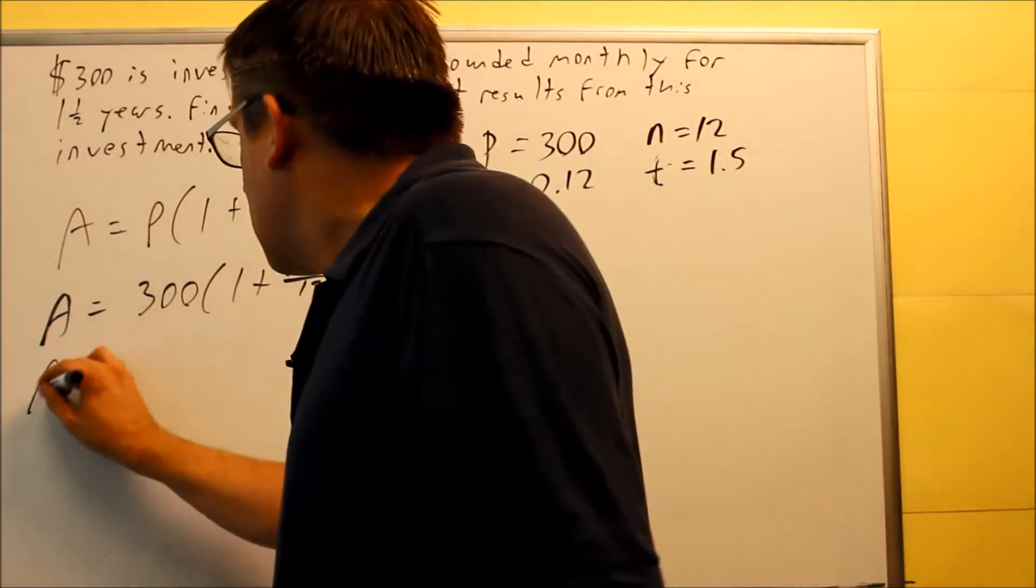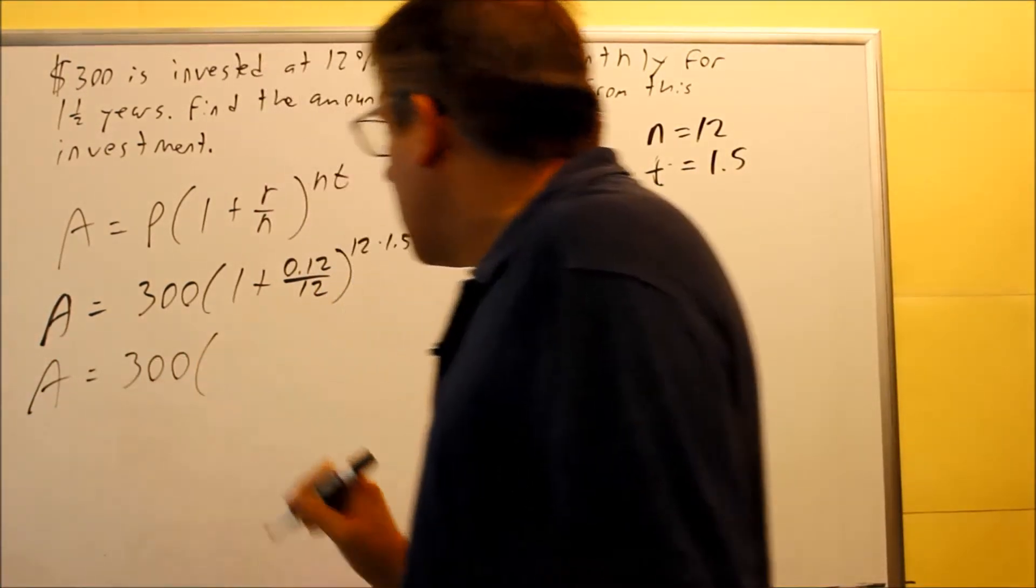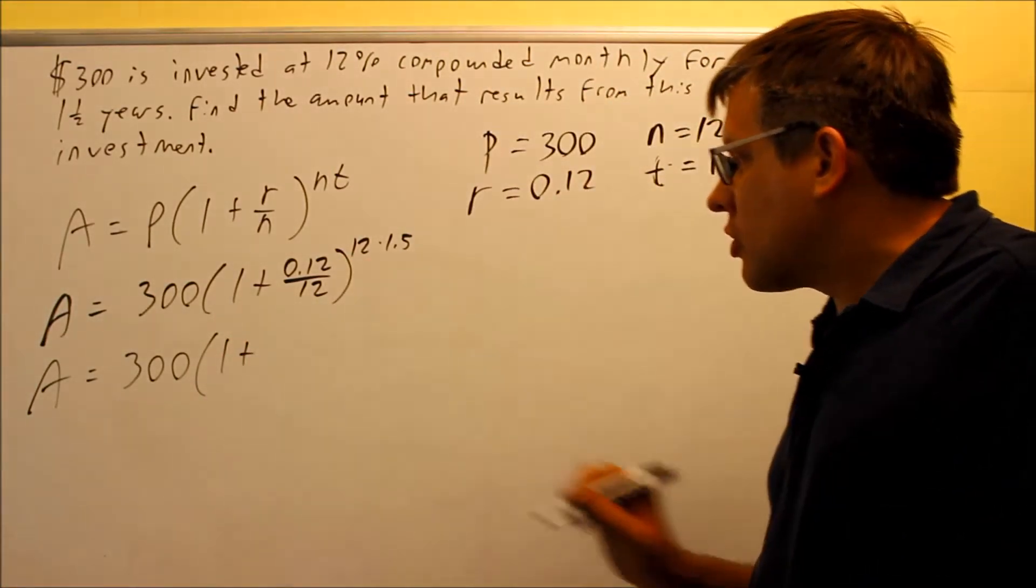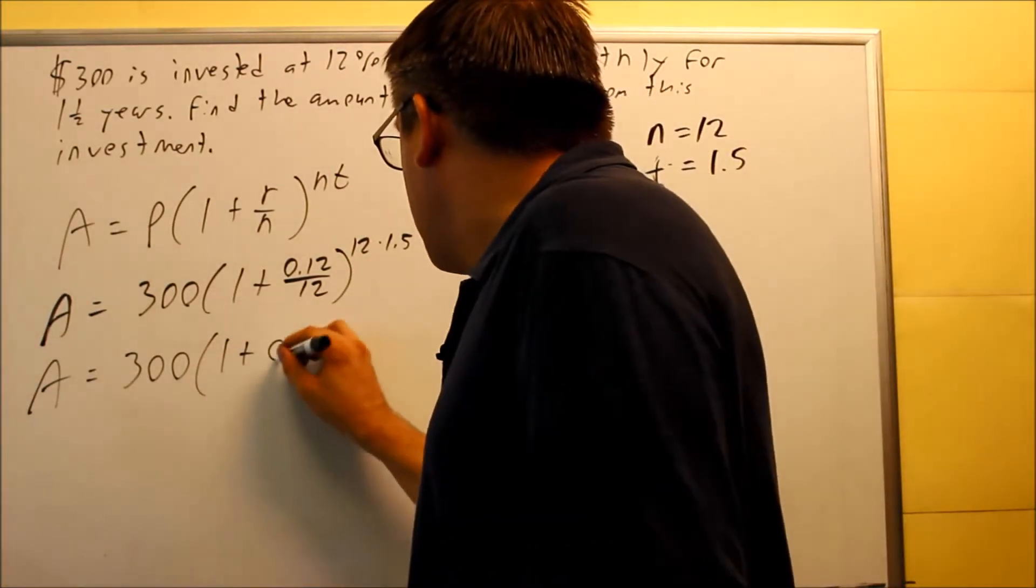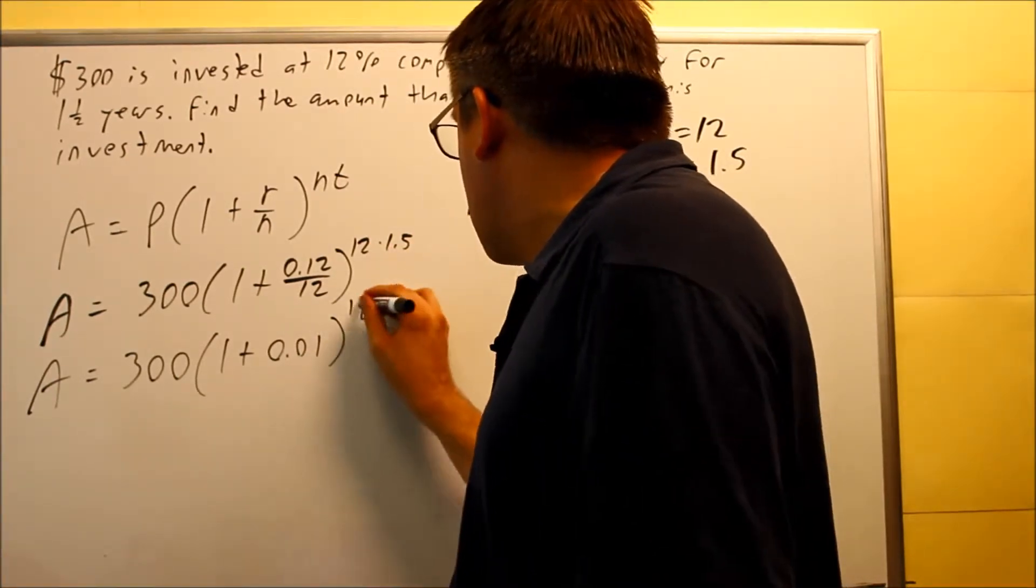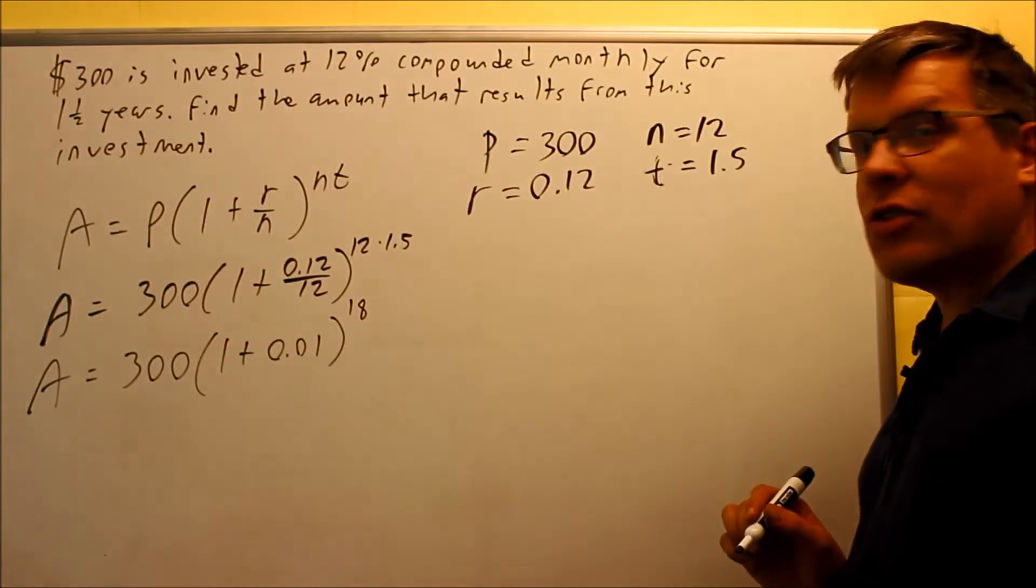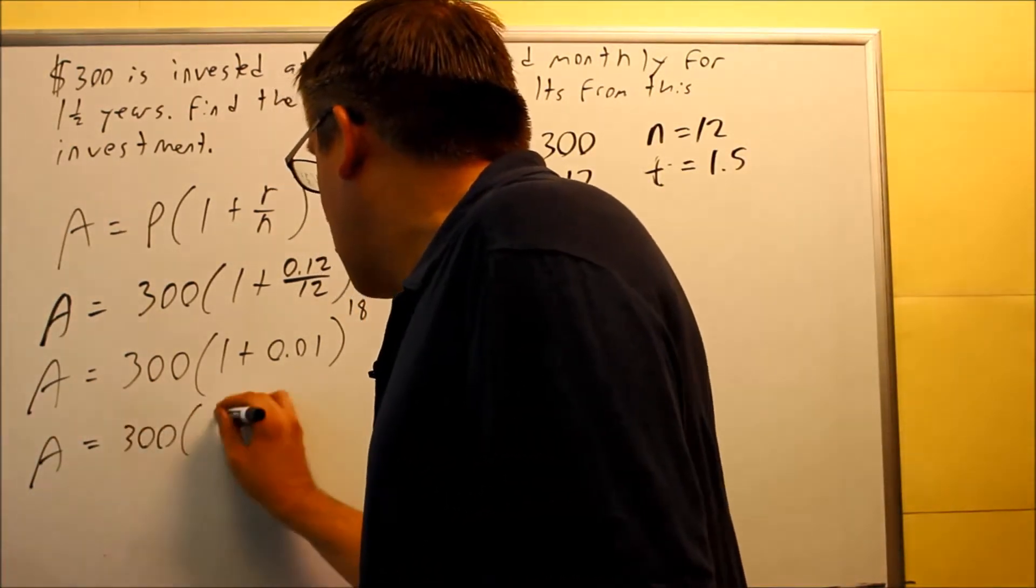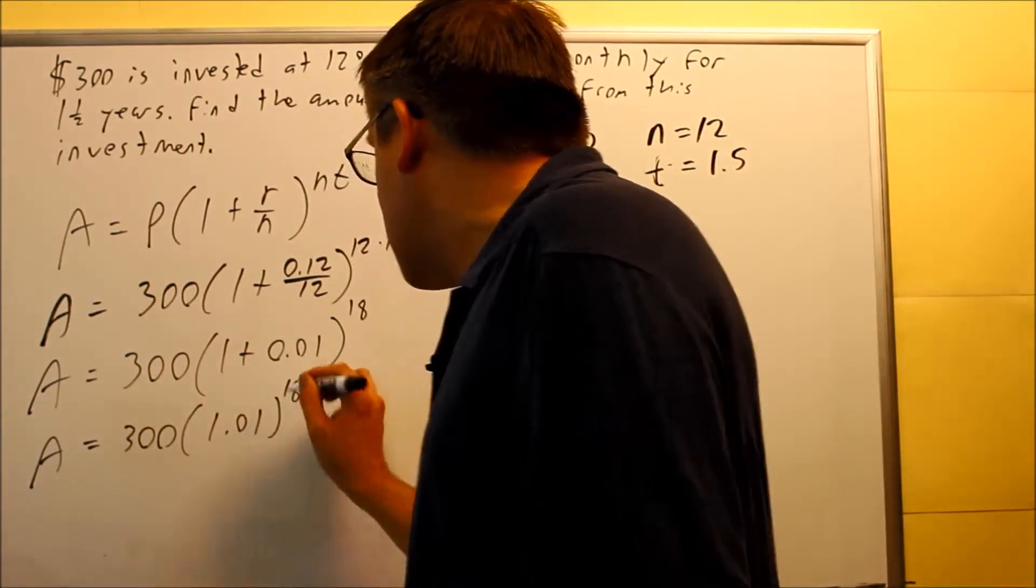My amount is equal to 300 times—0.12 divided by 12 is going to be 0.01. I'm going to multiply 12 times 1.5, you're going to get 18. So now I have 300 times 1.01 raised to the 18.